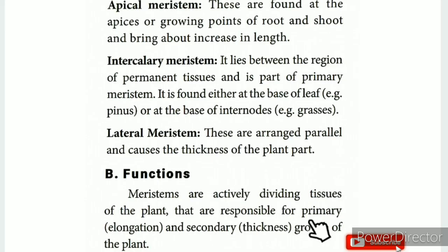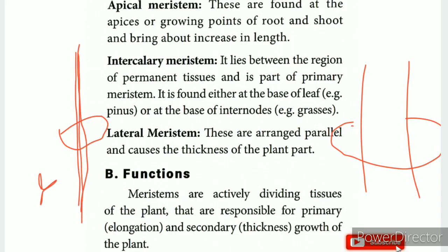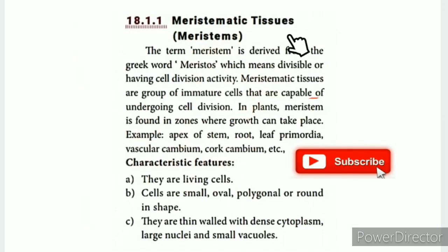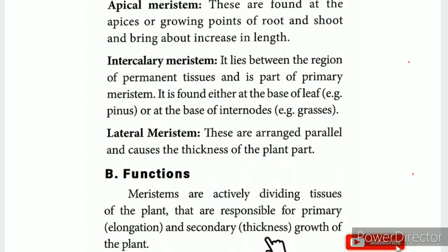Meristems are actively dividing tissues of the plant that are responsible for primary and secondary growth. Primary growth refers to elongation — the increase in height of the plant. Secondary growth refers to increase in thickness of the plant, which is caused by the activity of the lateral meristem such as vascular cambium.